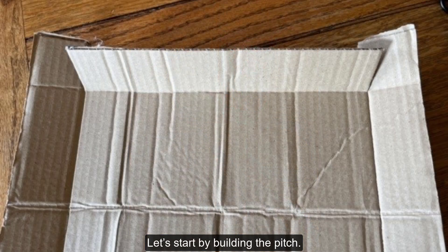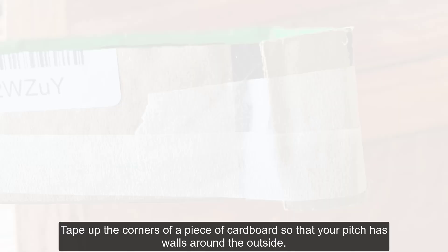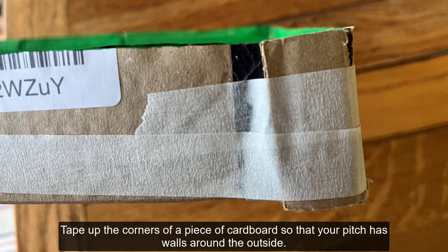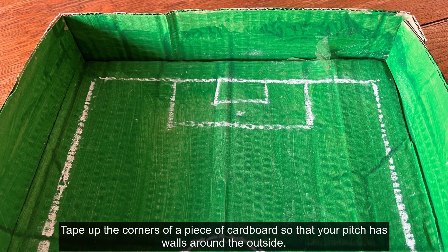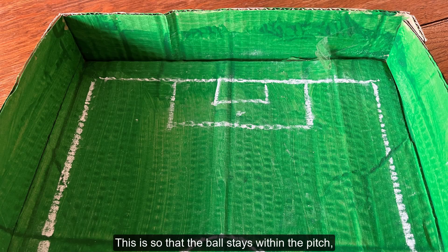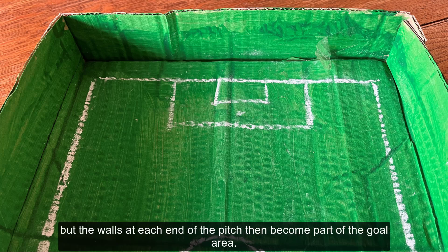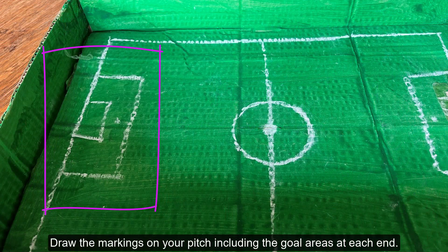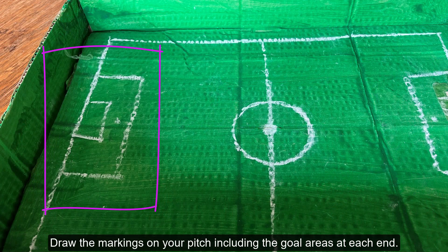Let's start by building the pitch. Tape up the corners of a piece of cardboard so that your pitch has walls around the outside. This is so that the ball stays within the pitch, but the walls at each end of the pitch then become part of the goal area. Draw the markings on your pitch, including the goal areas at each end.